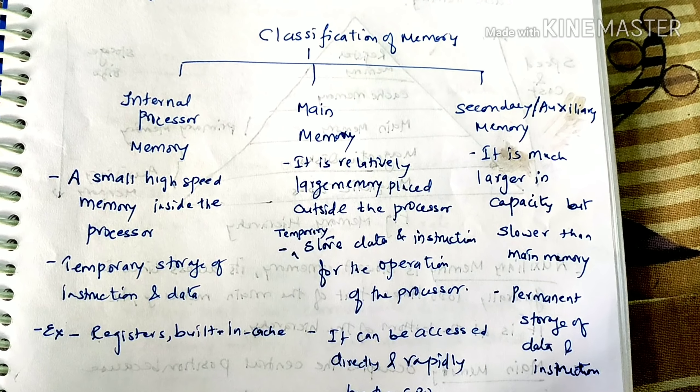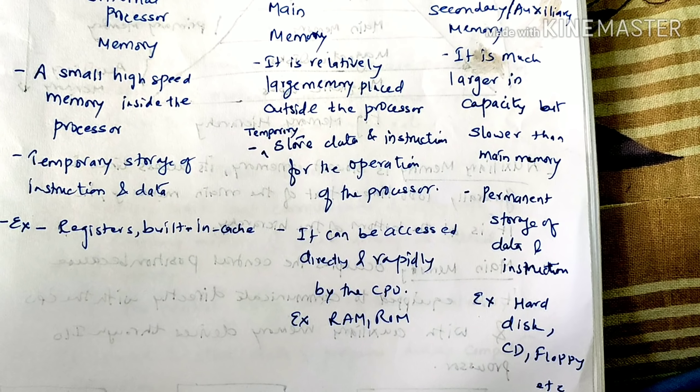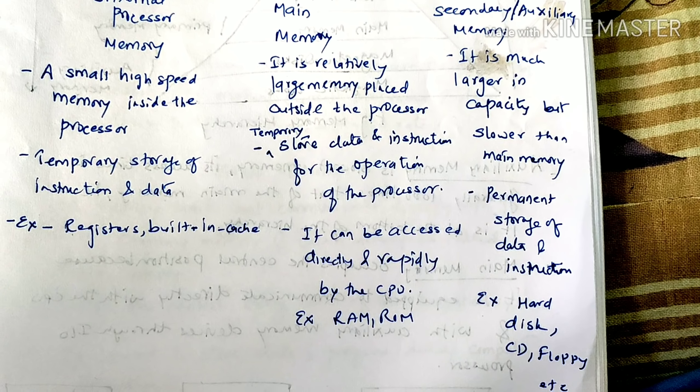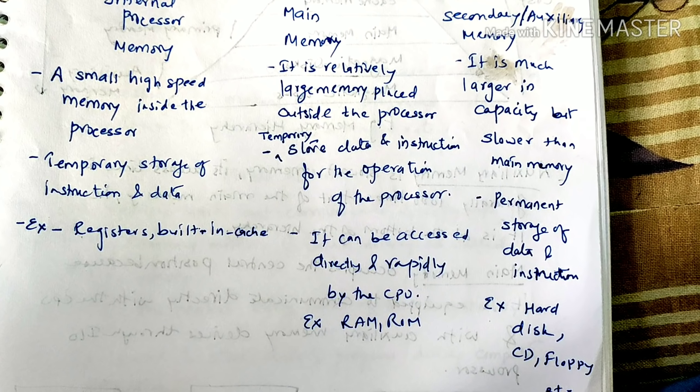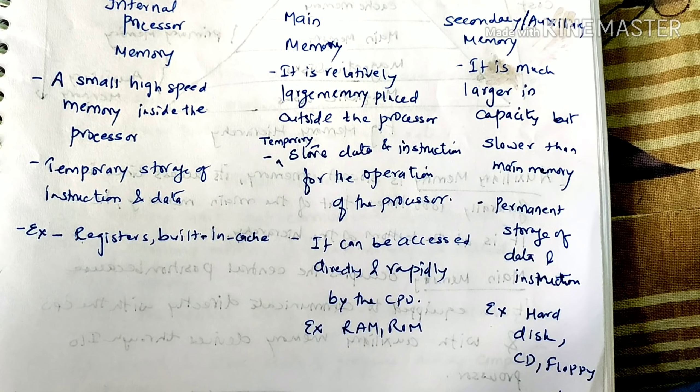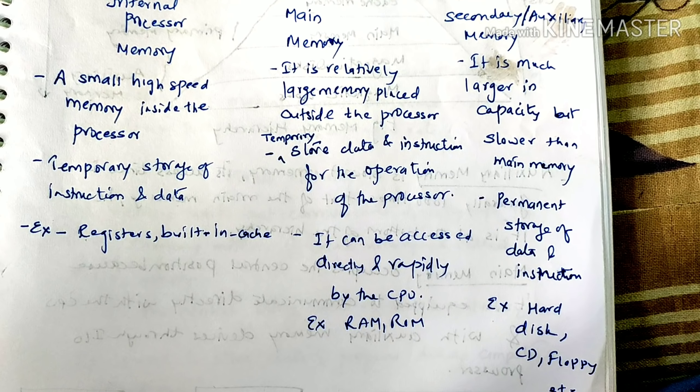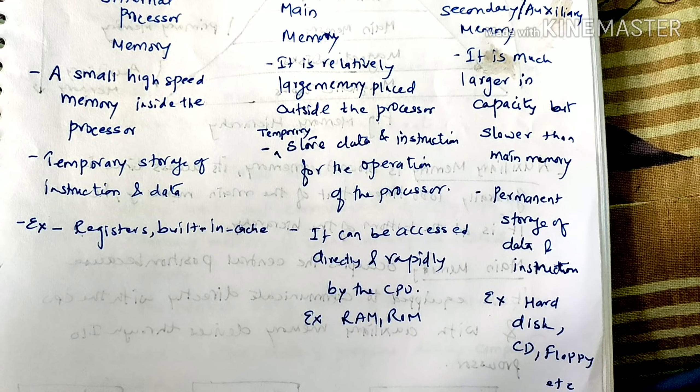Next comes main memory. It is a relatively large memory placed outside the processor — larger than internal processor and cache memory. It is placed outside the processor and temporarily stores data and instructions for the operation of the processor. It can be accessed directly and rapidly by the CPU, and its speed is faster than auxiliary memory but less than built-in cache memory. Examples are RAM and ROM. When you execute an application or program, it comes into main memory and the CPU executes it.